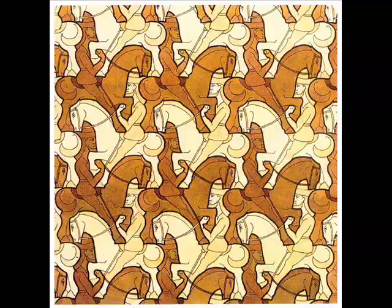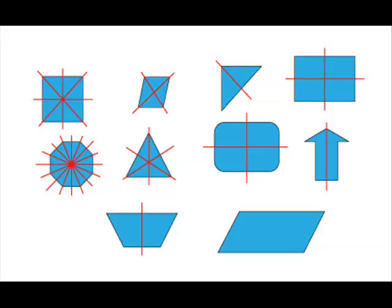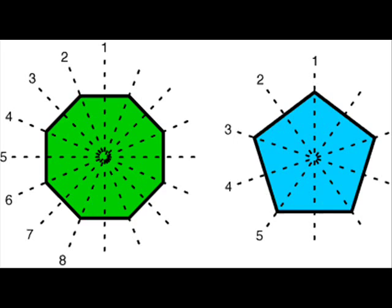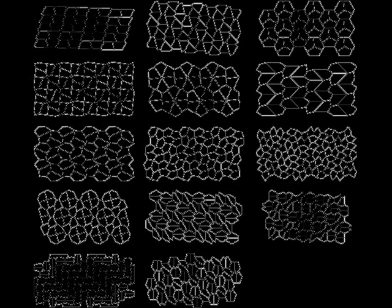One thing we notice about all the shapes that tile the plane is that they have two or more lines of symmetry. This is because in order to get shapes to fit together without leaving any gaps, they need to be equal and opposite in two dimensions on both sides in order to tile the two-dimensional plane.